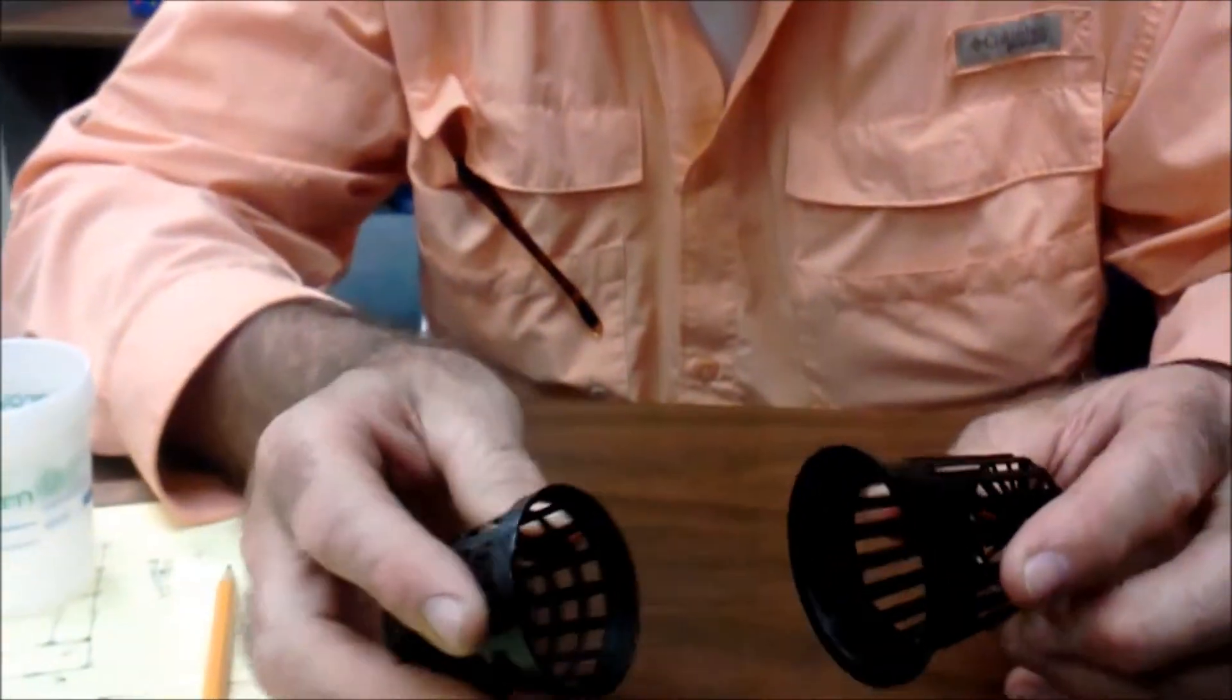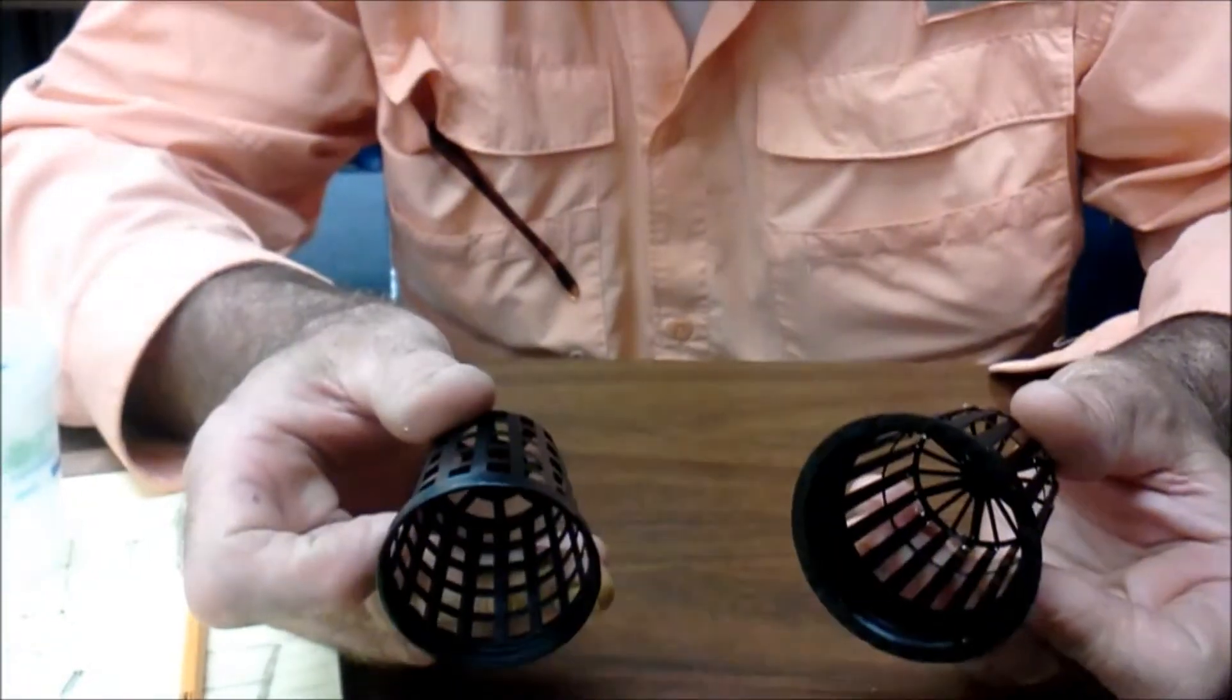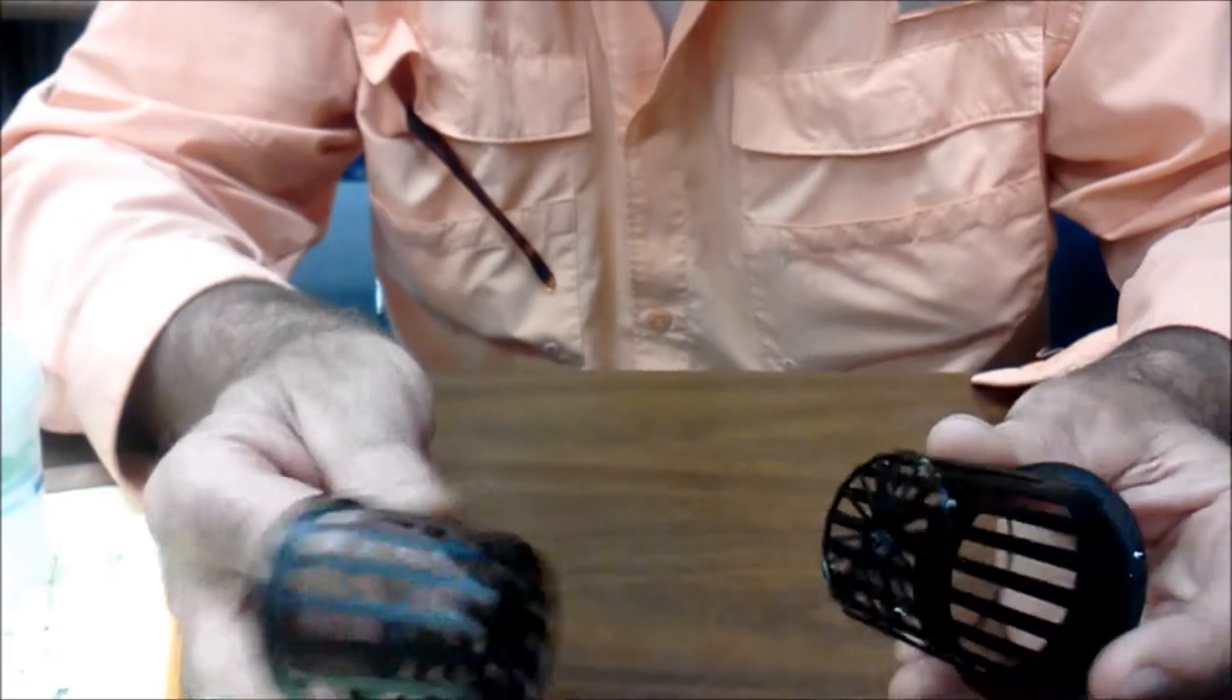These black ones are the standard aquaponics and hydroponics commercial growing pots. You can see the difference in the two.